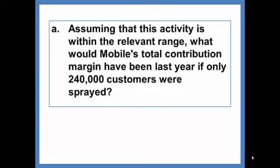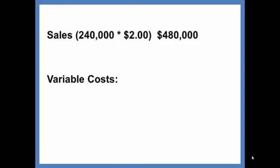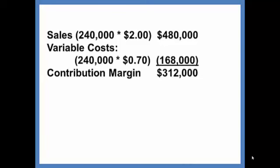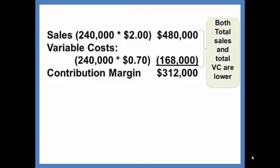Assuming that this activity is within the relevant range, what would Mobile's total contribution margin have been last year if only 240,000 customers were sprayed? We'll recompute the sales and the variable cost to get the contribution margin. Sales would have been 240,000 customers times $2, or $480,000. Variable cost would have been 240,000 customers times $0.70 per customer, or $168,000. You can see that variable cost would decrease from $175,000 to $168,000 if fewer customers are serviced. This leaves us with a contribution margin of $312,000. Note that because both sales and variable cost are lower, the contribution margin is also lower. This entire top section of the contribution margin income statement will vary together with activity.